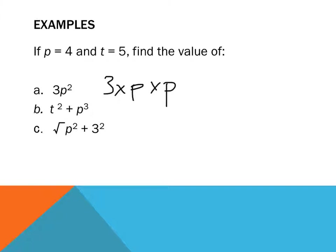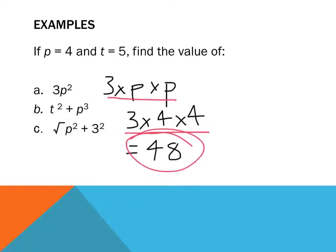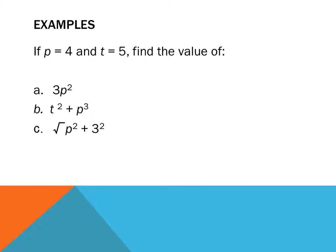So, what does p equal? p equals 4. So, 3 times 4 times 4. What are 3 fours? 3 fours are 12. 12 times 4 is 48. So, my answer for this one is 48. It's very important to first expand it, then substitute it in, and then find the answer.